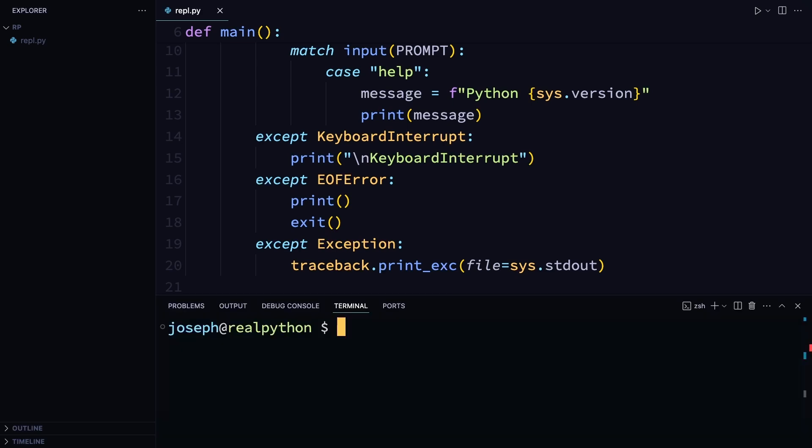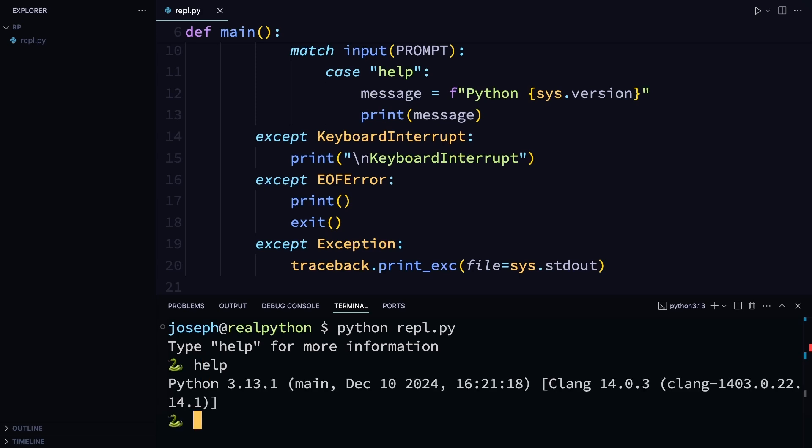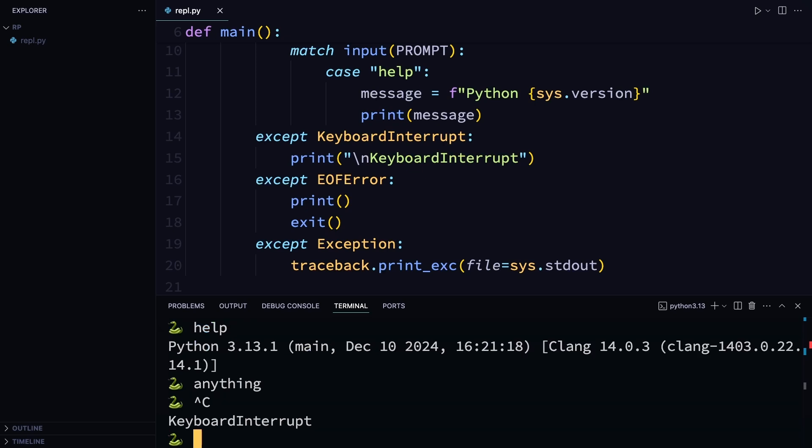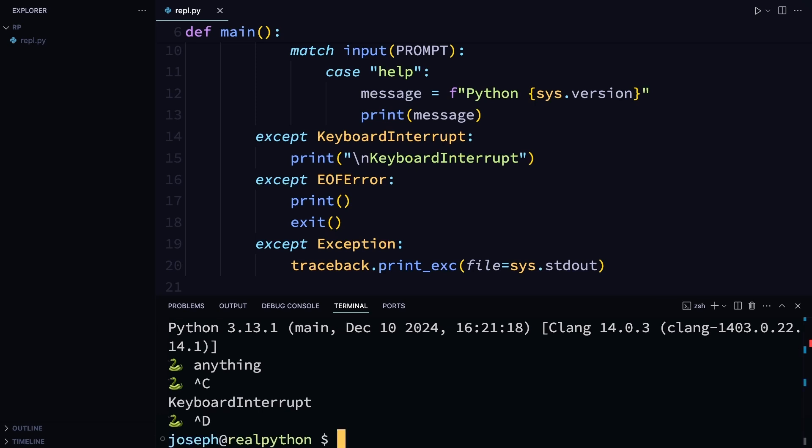Open a shell and run Python REPL.py. Here's your prompt. Now you can try things out. Type help. Here's the info from sys.version. Type anything. You can see nothing happens because you aren't yet handling this condition. Type ctrl plus c. And there's your keyboard interrupt. Finally, to close, type ctrl plus d. And it closes. Very basic, but a good proof of concept.